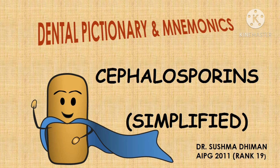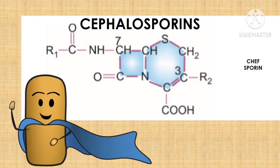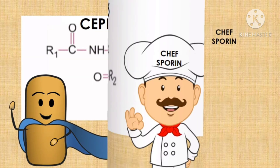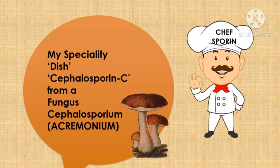The classification of cephalosporins is an important topic but it's very volatile. I will provide you with certain mnemonics and easier tricks to learn the drugs which fall under the category of various generations of cephalosporins. I'll tell you a short story — once upon a time there was Chef Sporine.